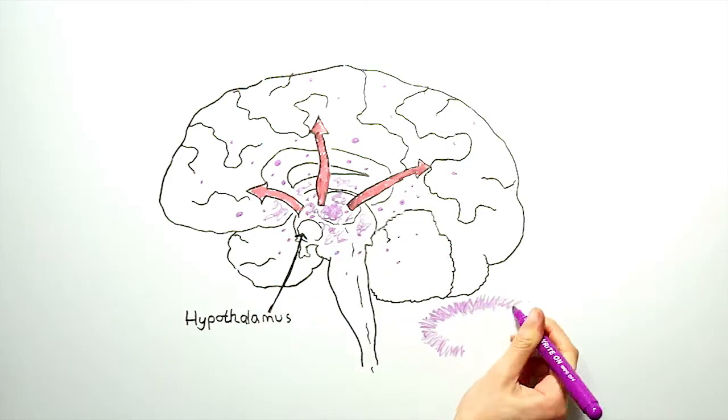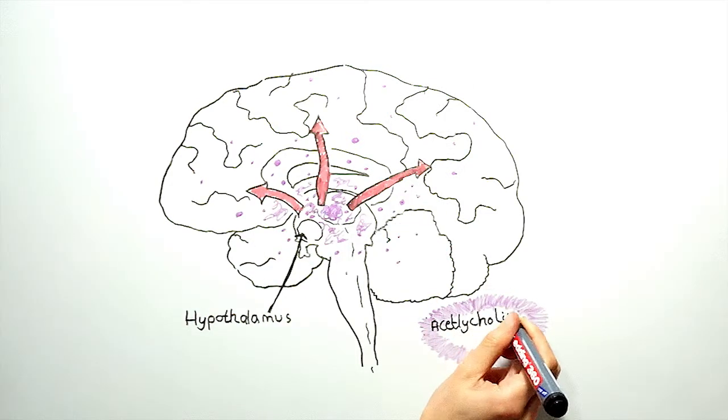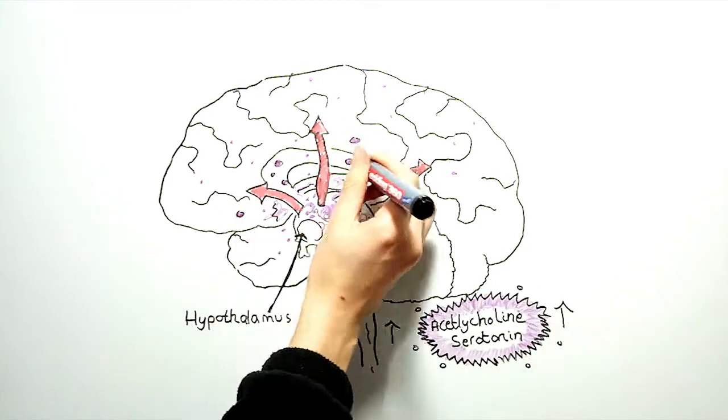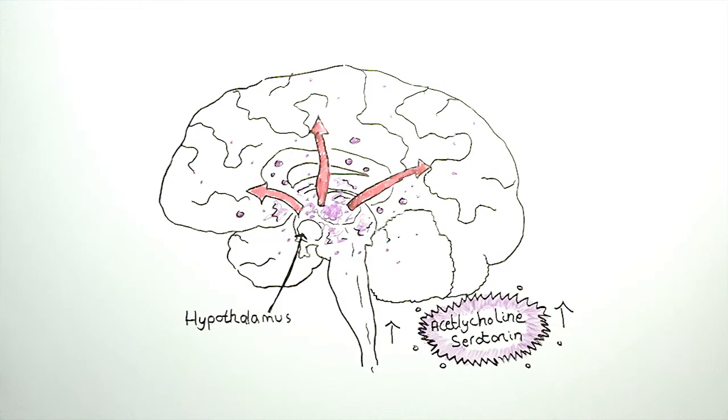During times of heightened emotion, this region of the brain becomes very active and the neurotransmitters acetylcholine and serotonin are produced and released in large quantities.